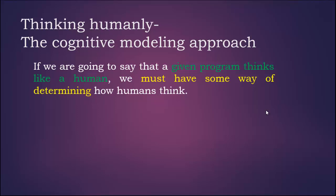Why do we need the definition or boundary for AI in terms of thinking humanly? In AI, we are going to write the program for the human being in terms of intelligence. If we are going to say that a given program thinks like a human, and when we are saying about thinking, it is related to the mind. We must have some way of determining how humans think. Then only you can test that your program is thinking like the human being or human mind.